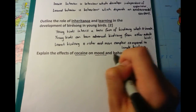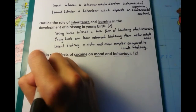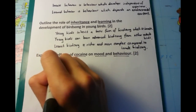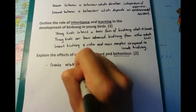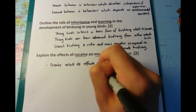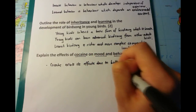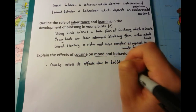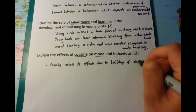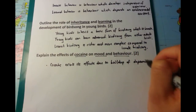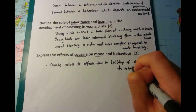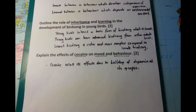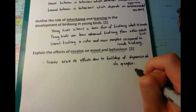The last question asks to explain the effects of cocaine on mood and behaviour. It involves a lot of neurophysiology. Cocaine exerts its mind-altering effects due to a build-up of dopamine at the synaptic gap, which results in changes in mood and behaviour.